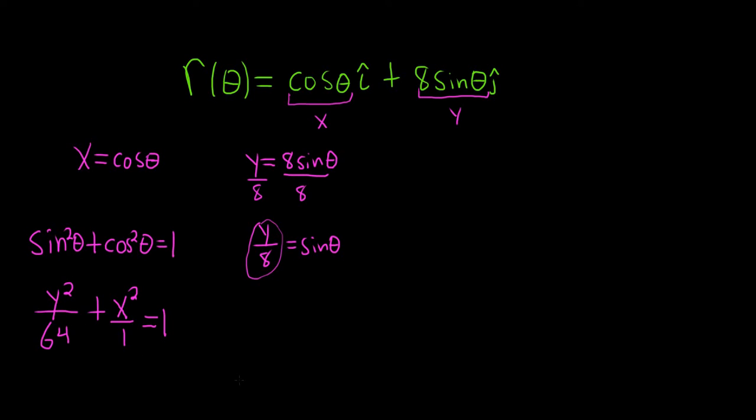So this is the graph of an ellipse. Recall if you have a plus sign here, and these numbers on the bottom are different, it's an ellipse. In an ellipse, a is always the square root of the bigger number. So in this case, the bigger number is 64. So a is the square root of 64, so a is 8. b is going to be the square root of the smaller number, so b is 1.